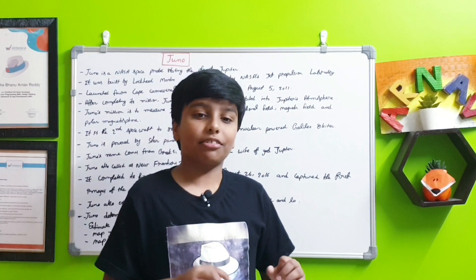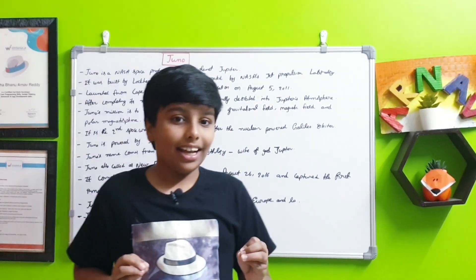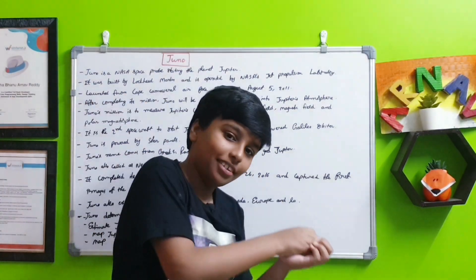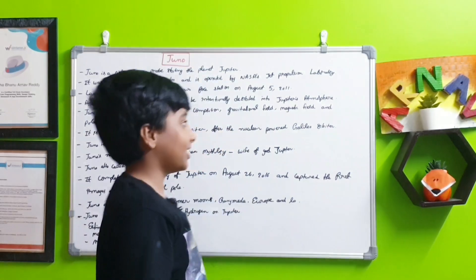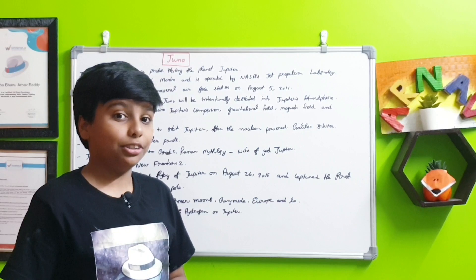So that means in 2025, finally Juno will stop orbiting Jupiter. And instead of going to another planet, it will go into the gas atmosphere of Jupiter.